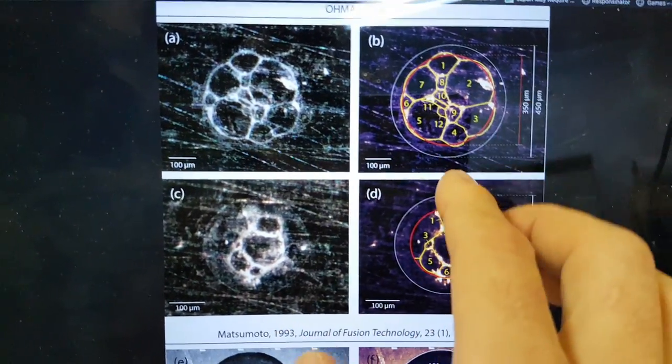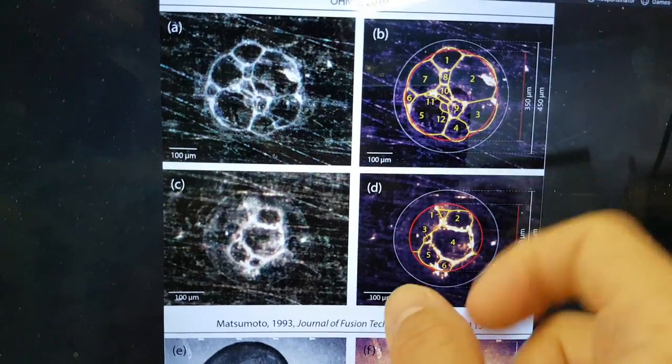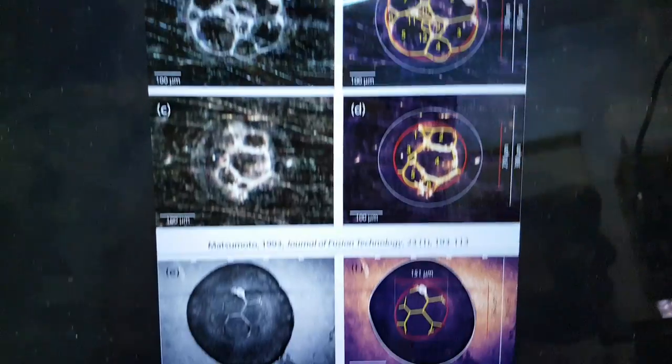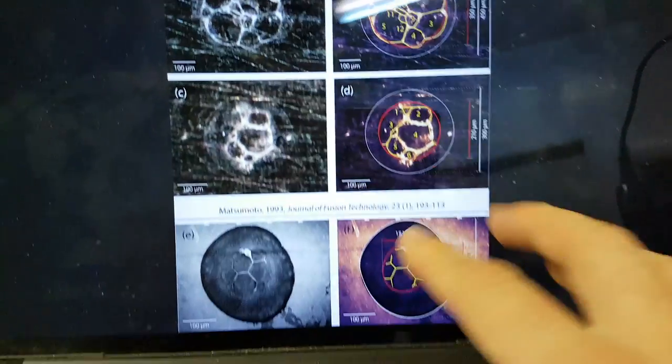He defined the crystals and the boundary areas between the two that I observed on plate two and the one that was in Matsumoto's 1993 January paper in Fusion Technology.